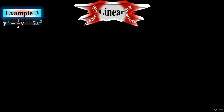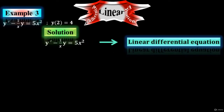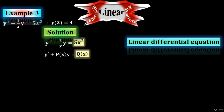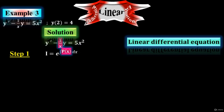Example number three: y prime minus 1 over x times y equals to 5x squared, with initial condition y of 2 equals to 4. It is a standard linear differential equation. Comparing with the formula, P of x is minus 1 over x, and Q of x is 5x squared. Step one: to find the integrating factor. The integrating factor equals to e to the integral of P of x dx. Substitute P of x, which is minus 1 over x. The integral of minus 1 over x is minus natural log x, which equals to natural log of x to the minus 1.